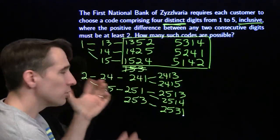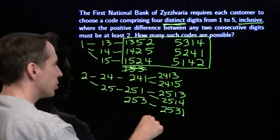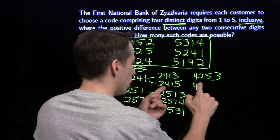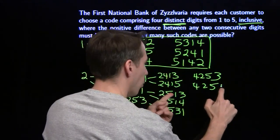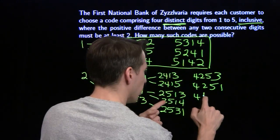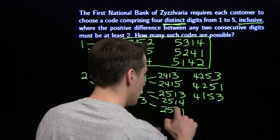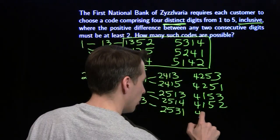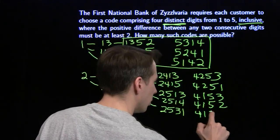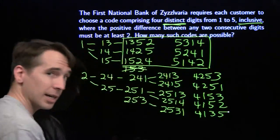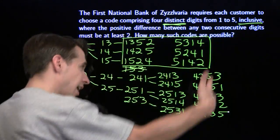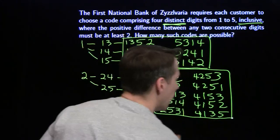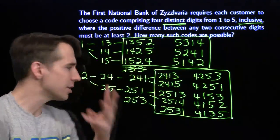We use symmetry to get the five solutions starting with four: replace twos with fours, fours with twos, ones with fives, fives with ones, and three stays three. So we now have sixteen total codes. All we have left is to think about the ones that start with three.